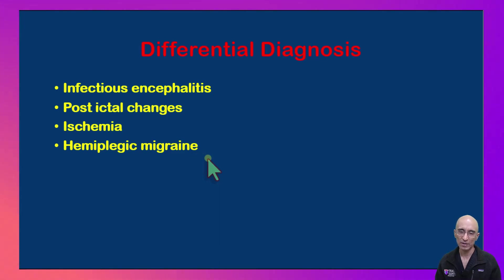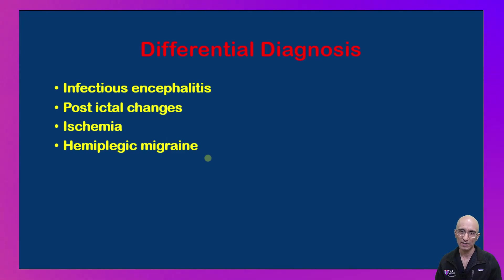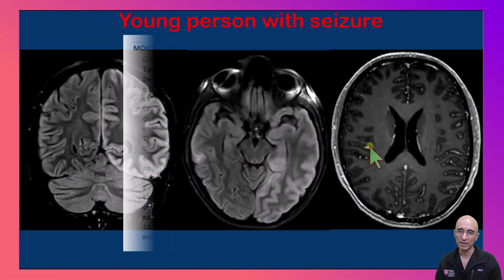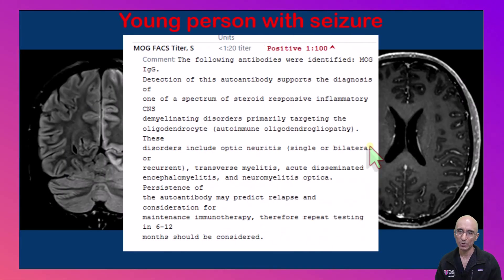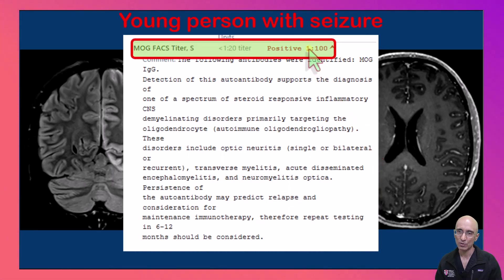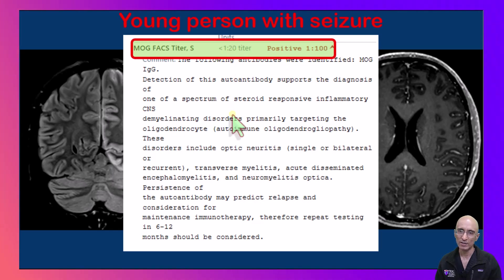Patient underwent extensive workup including CSF analysis, blood analysis, CT scan of the chest, abdomen, and pelvis to assess for any underlying malignancy. Patient's autoimmune profile titres came back which demonstrated very high levels of MOG antibodies, which was 1:100 — the normal is less than 1:20.